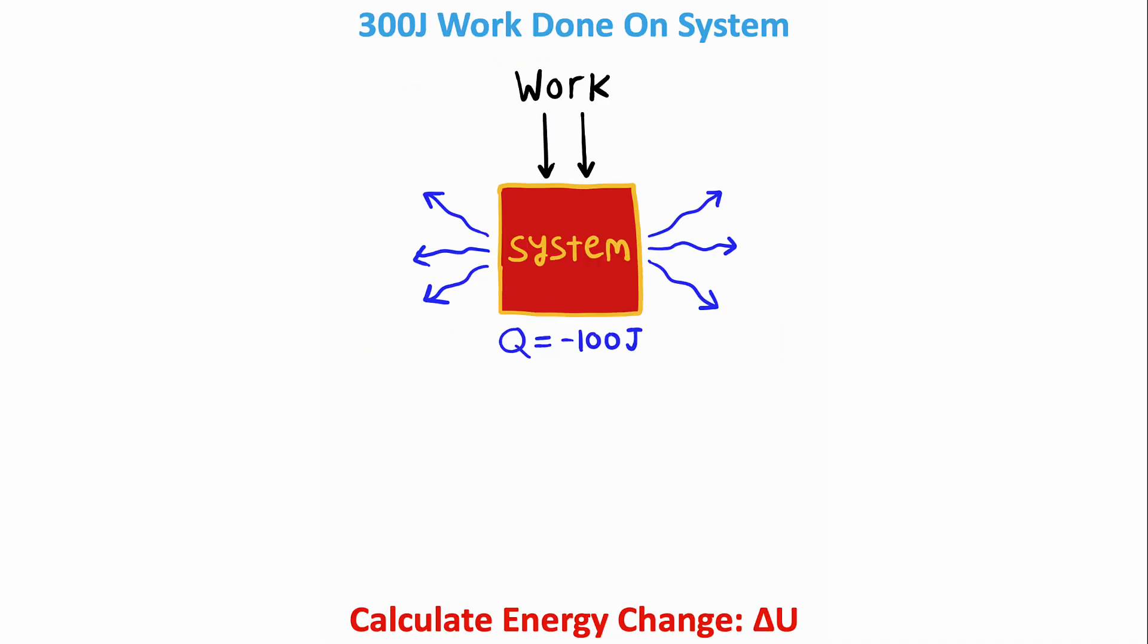Let's see how fast we can solve this problem. We have 300 joules of work done on a system, and we want to calculate the change in internal energy. Now to solve this problem, I can use the first law of thermodynamics equation.